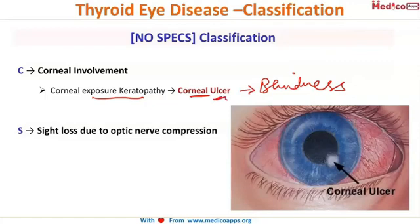S stands for sight loss — and importantly, this is not due to a corneal ulcer. The sight loss is due to optic nerve compression. Because of excessive infiltration of the orbit with mucopolysaccharides and excessive soft tissue swelling, there is compression of the optic nerve causing blindness.